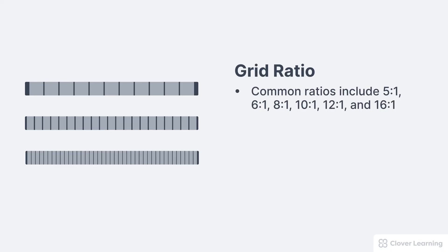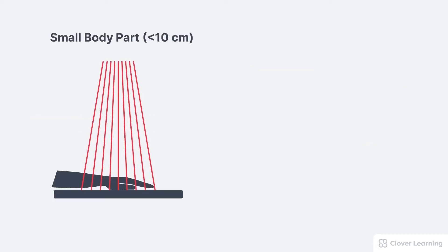The choice of a grid ratio depends on several factors, including the body part being imaged, the size of the patient, the KVP used, and giving consideration to the patient dose.